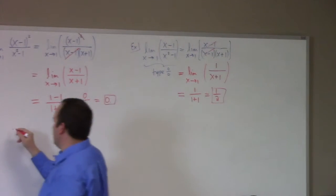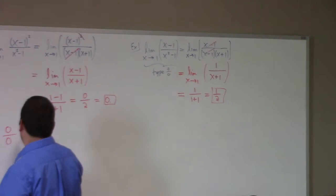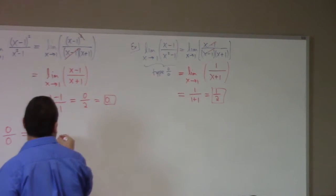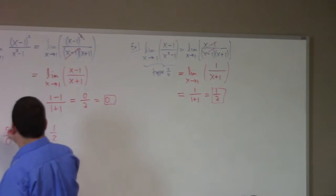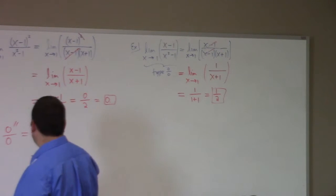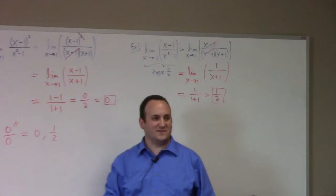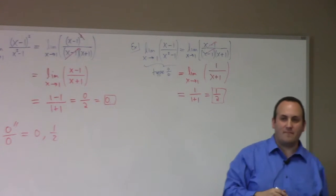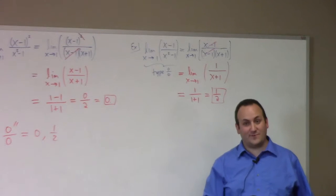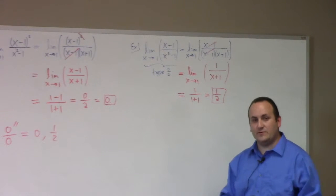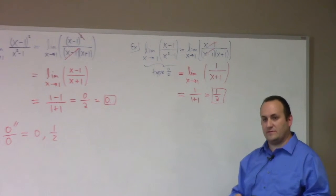So apparently we have already learned, and I'm going to put this in quotes because I don't really like it, zero over zero is equal to zero, it's equal to a half. What else is it equal to? Anything you like. That's why it's an indeterminate form. We don't know what it is until we work out the details.